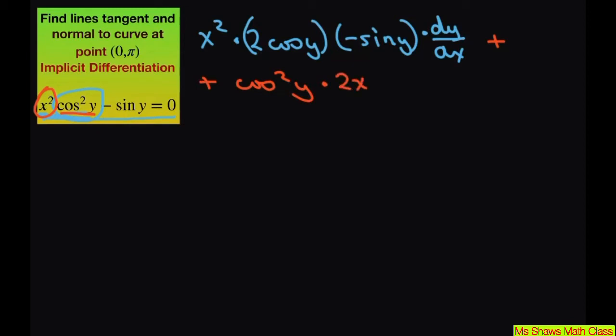Then we have the second piece. The derivative of sine is cosine. So that's just going to be cos(y) and it was with respect to y. So that's dy/dx equals zero.